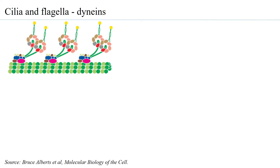The dyneins are made up of several polypeptides including two heavy polypeptides, with globular ring-like heads. Each subunit of this ring belongs to a family of proteins called the AAA+ ATPase family, so each subunit can bind to ATP and hydrolyze it. This is the molecular motor domain that converts chemical energy into mechanical energy. The dynein has microtubule-binding regions that allow one set of microtubules to bind to the adjacent set.